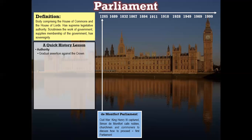He invited other leading nobles, some knights of the realm, bishops, and a couple of burghers — mayors of local town areas. These were commoners. As a consequence, this is often termed the very first Parliament because it involves common people. From that point until around about the 17th century — the 1600s — you've got a gradual assertion of power and authority against the Crown.